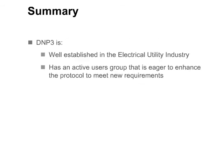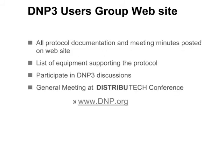D&P3 is well established in the electrical utility industry and is becoming established in other industries as well. It has an active user group that is eager to enhance the protocol to meet new requirements while maintaining backwards compatibility. The D&P users group maintains an active website containing all the protocol documentation and meeting minutes. It also has a list of equipment that supports D&P3 and indicates certification status of that equipment. Users may join forums to have discussions with other users as well.